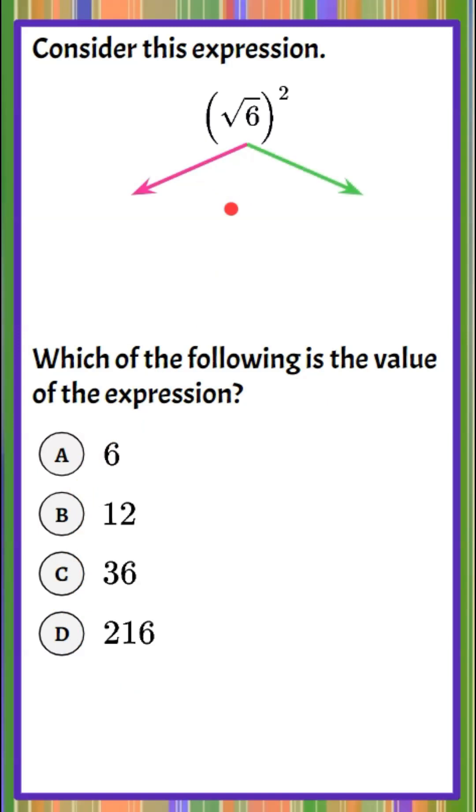We're going to do this in two different ways today. The first way we're going to simplify is by understanding that the exponent of 2 means to take the base of this power, square root of 6, and multiply it by itself.